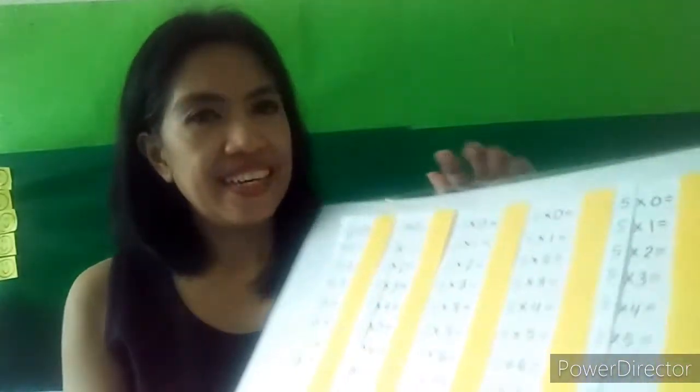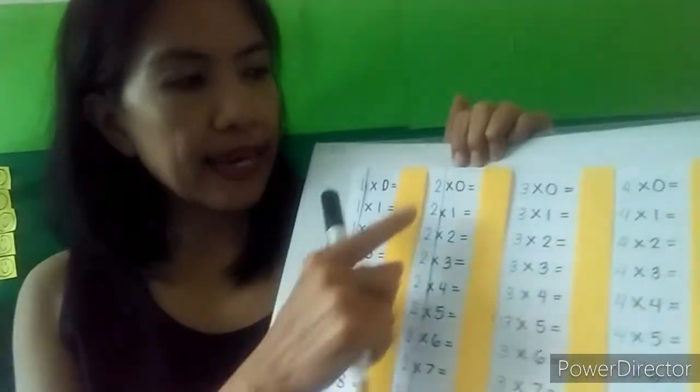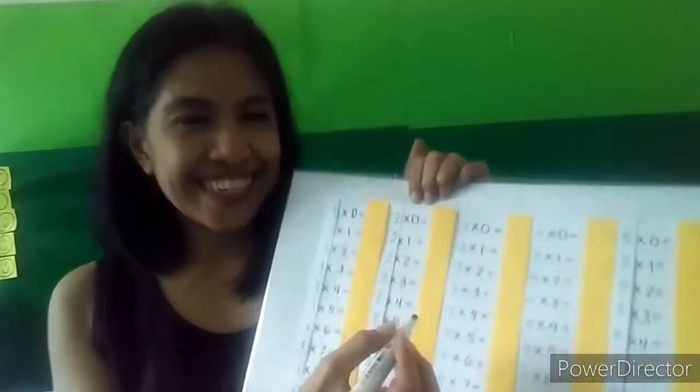If we multiply any number by zero, the answer is zero. If we multiply any number by one, that number itself is the answer. Let's go to the table of two. Two times zero is zero.